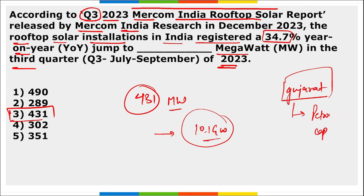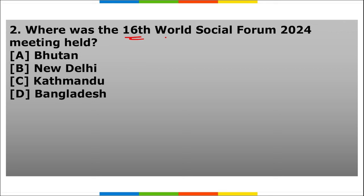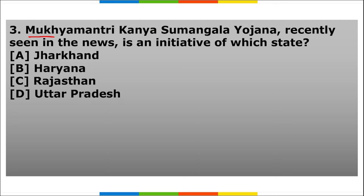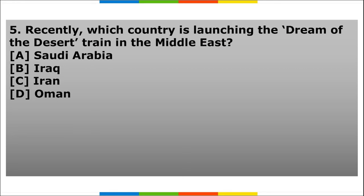Homework section: First, Kanha Tiger Reserve is in which state? Second, where was the 16th World Social Forum 2024 meeting held? Third, Mukhyamantri Kanya Sumangala Yojana seen in news is an initiative of which state? Fourth, which bank clinched the title of Best Technology Bank of the Year award? Fifth, which country is launching the Dream of the Desert train in the Middle East?